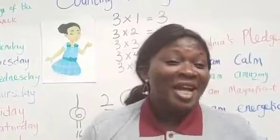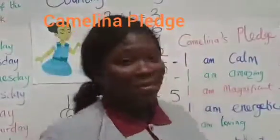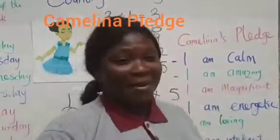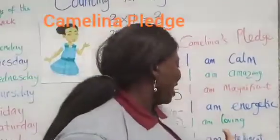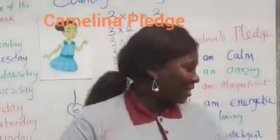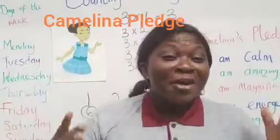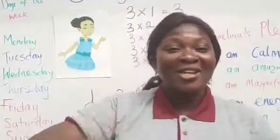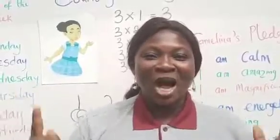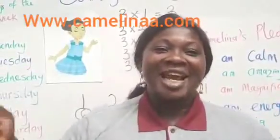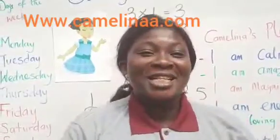We're going to end today by reciting our pledge. I am calm, I am amazing, I am magnificent, I am energetic, I am loving, I am intelligent, I am noble, and I am awesome. Don't forget to subscribe on our YouTube channel Camelina Learning Kids, and also our website.